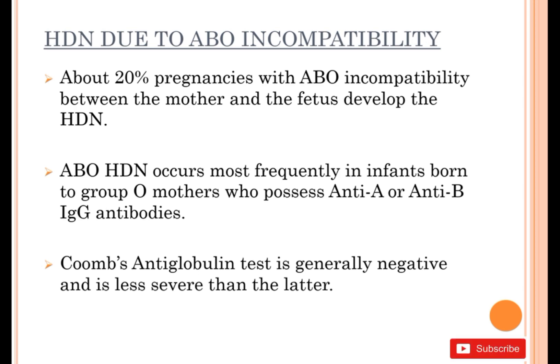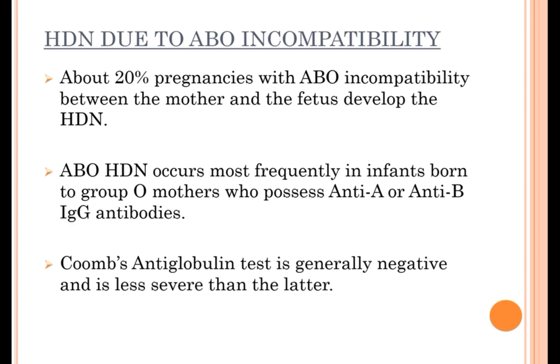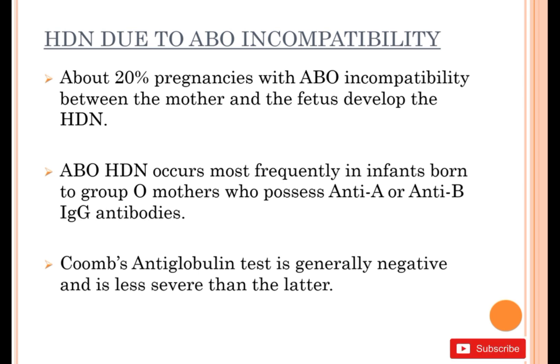HDN due to ABO incompatibility. About 20% of pregnancies with ABO incompatibility between the mother and fetus develop HDN. ABO-HDN occurs most frequently in infants born to group O mothers who possess anti-A or anti-B IgG antibodies. The Coombs antiglobulin test is generally negative and the disease is less severe.